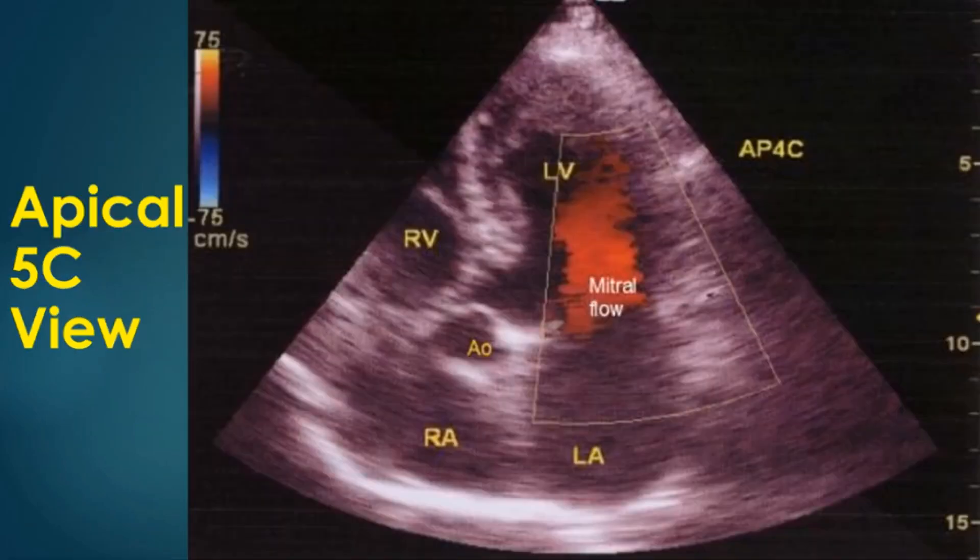A slight tilt from the apical four-chamber view opens the aortic root and it is called the apical five-chamber view. The apical five-chamber view is used to measure aortic flow and the gradient in aortic stenosis.